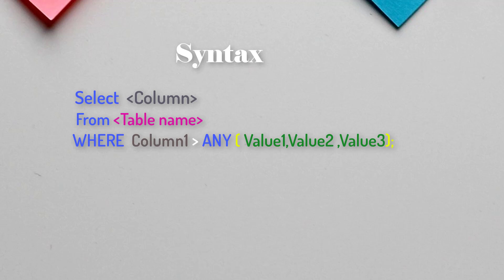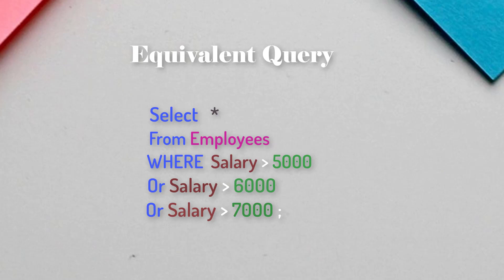What exactly does the ANY operator do? It compares the value of a column with whatever values we have given in the bracket. It compares with all the values, and if any condition matches then it returns true — meaning the query will return some result. The equivalent query compares column one greater than value one OR column one greater than value two OR column one greater than value three.